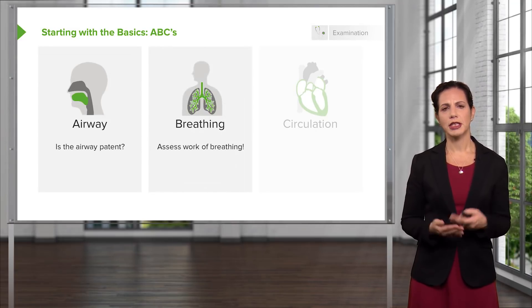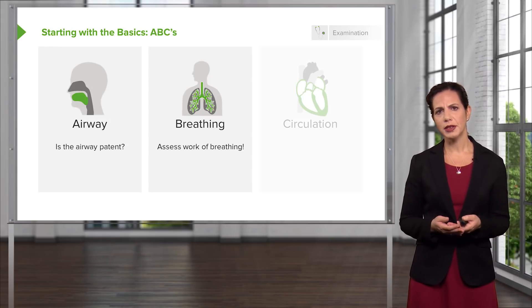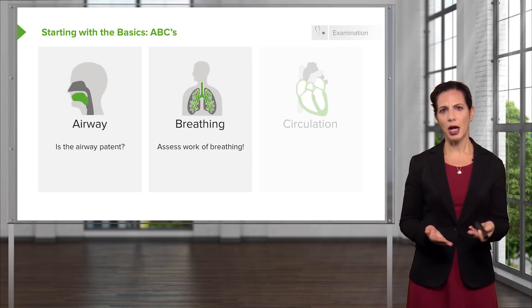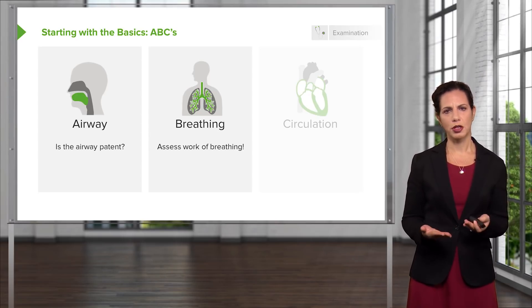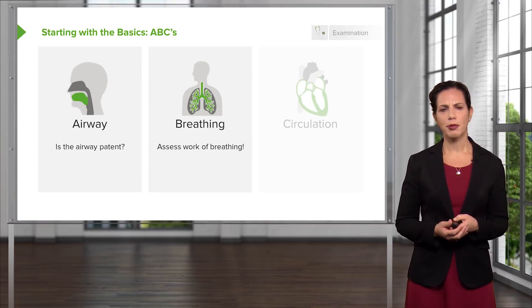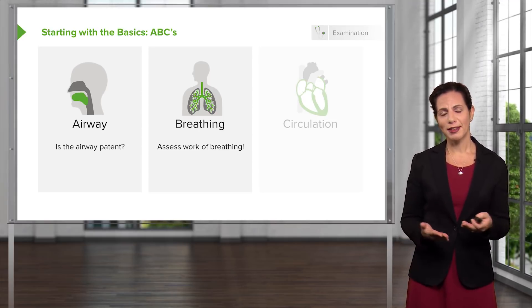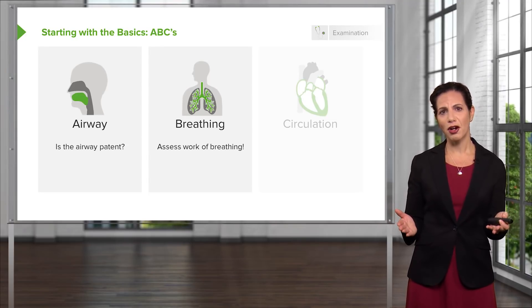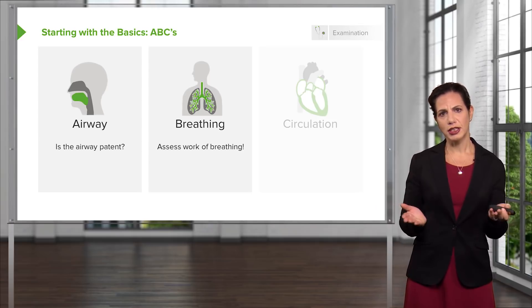Next we think about breathing, and we want to assess the work of breathing. One of the first things is to assess pulse oximetry — is the patient hypoxic, is their oxygenation okay? We also just look at and talk to our patient. Are they using accessory muscles? Is their respiratory rate elevated? Are they using their sternocleidomastoids or abdominal muscles to help them breathe? Can they speak? Patients who are screaming that they're having a hard time breathing are likely not struggling as severely. We want to see if they can speak one-word sentences or longer sentences.